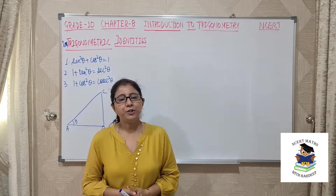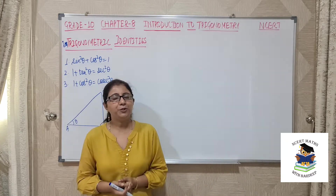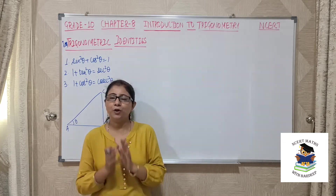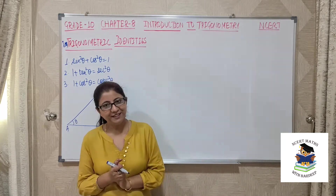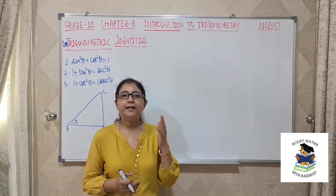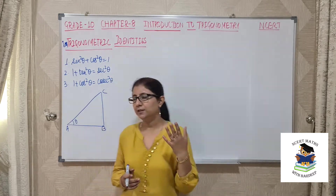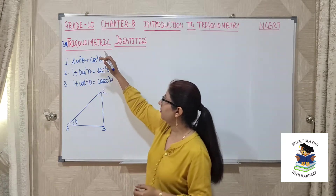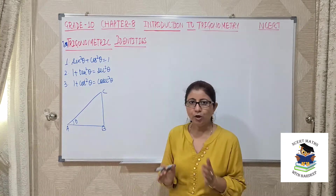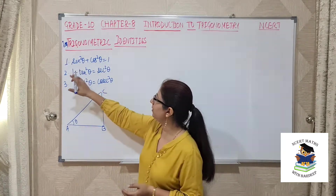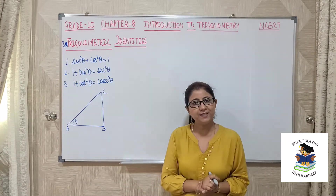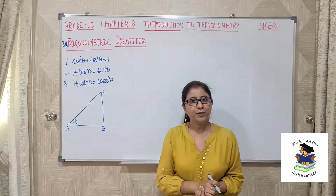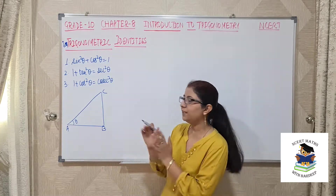Similarly, an equation involving trigonometric ratios will be referred to as an identity if it is true for all values of the angle involved. There are 3 identities we will use in this chapter: sin²θ + cos²θ = 1; 1 + tan²θ = sec²θ; and 1 + cot²θ = cosec²θ.